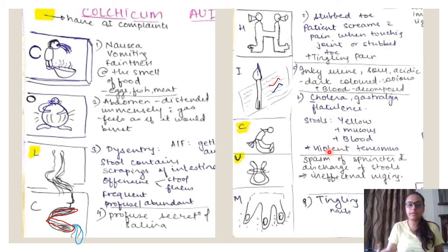This remedy also has a good amount of tenesmus and pain which we see in other remedies like Colocynth or Mag Phos. Here the common symptoms that you can relate is the distended abdomen which causes the flatus and the cholera and dysentery with mucus and blood in it and the stool color is yellowish.